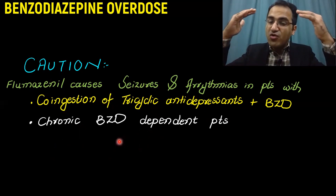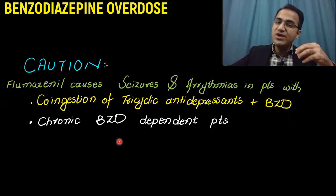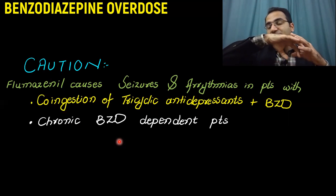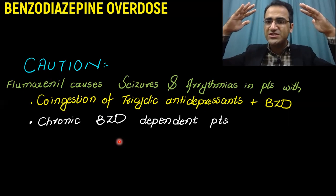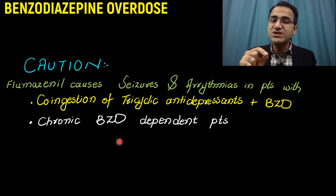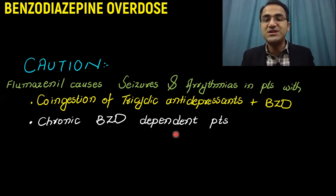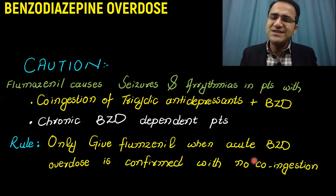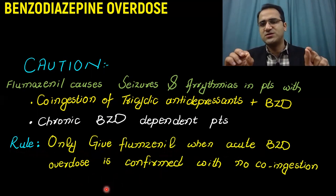Chronic benzodiazepine users have persistent suppression of the central nervous system. If you give flumazenil to such a patient, it antagonizes the benzodiazepine effect suddenly, causing excessive excitation of the CNS leading to seizures and arrhythmias. This risk applies only to chronic users, not those with acute ingestion. The simple rule: give flumazenil only when there is acute benzodiazepine overdose, no co-ingestion of tricyclic antidepressants, and no chronic benzodiazepine use.